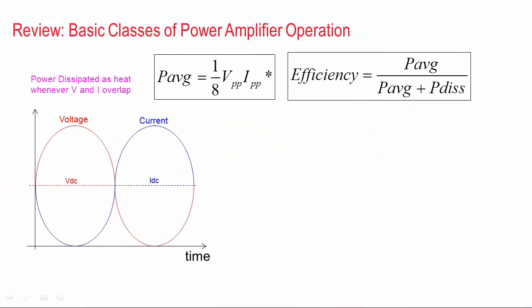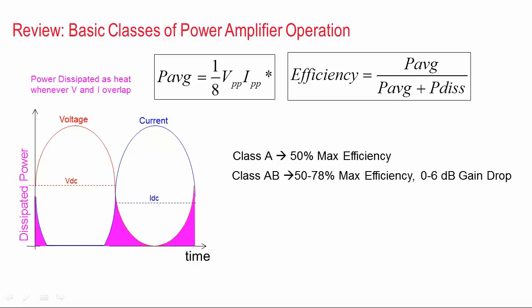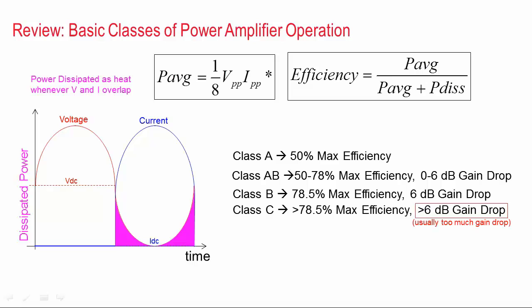First, I'd like to review the basic theory of operation for a power amplifier. Since power is dissipated whenever sinusoidal voltage and current waveforms overlap in time, we can improve the efficiency for a PA by adjusting the bias of the transistor to rectify the current waveform. And this changes the class of operation, which improves efficiency and lowers the gain. If we create a half-rectified current waveform, that's called Class B, and the ideal efficiency for this mode is 78.5%. So further rectifying the signal from here usually drops the gain too much to be useful.